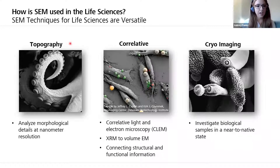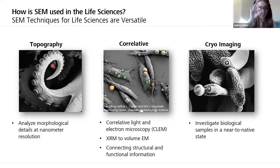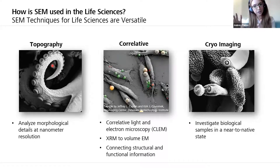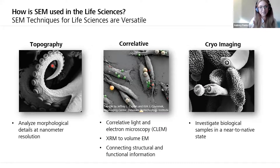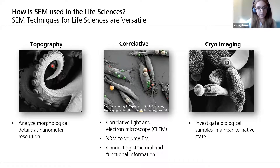Here is an image of an octopus, seeing those tiny little tentacles and suckers in high detail. We're also able to combine data from the scanning electron microscope with data from other types of microscopy, such as laser scanning microscopy or confocal. We call that correlative light and electron microscopy, or CLEM — connecting structural information with functional information. We can also connect other types of microscopy, like x-ray microscopes, with volume electron microscopy studies to see where you are in the sample.